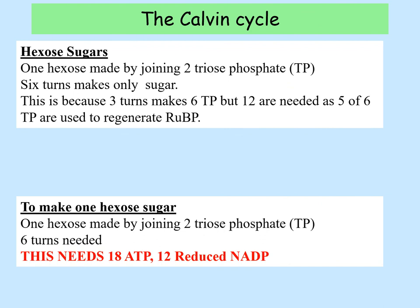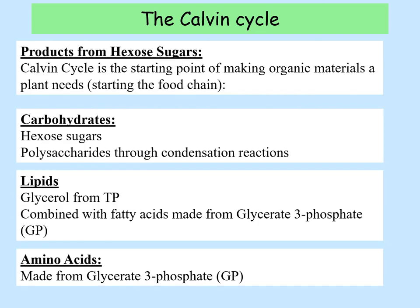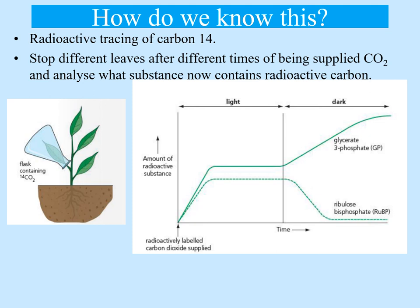So what is the importance of the Calvin cycle? The main products are hexose sugars, but we can also convert outputs into lipids and amino acids as discussed. How do we know all this? Scientists radioactively traced carbon dioxide using carbon-14. They stopped leaves doing photosynthesis after certain amounts of time — both in light and dark conditions — and identified the products. They found that whenever light was provided there was always slightly more glycerate-3-phosphate than RuBP because it's constantly being converted, and when the light was removed the plants ran out of ATP, meaning glycerate-3-phosphate accumulated as the final product.